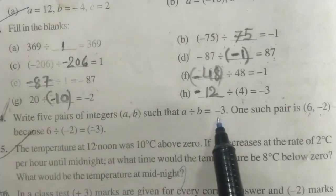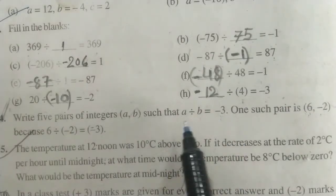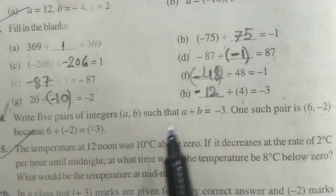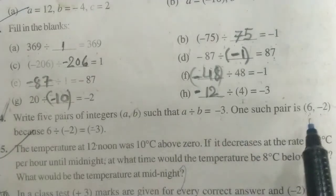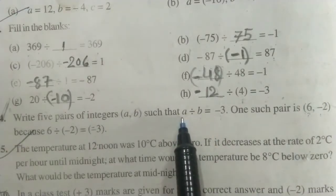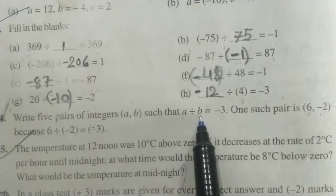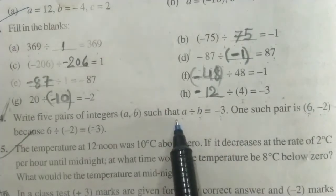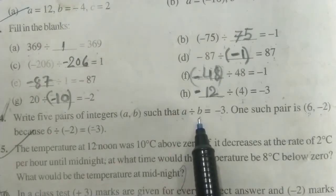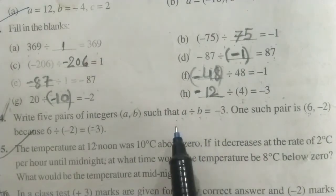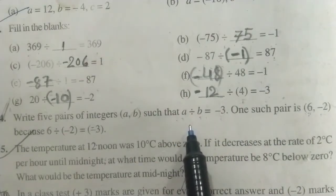इस प्रकार से हम और pairs ले लेंगे। Table ही ले लेते हैं। जैसे 6 लिया है, अब अगर 9 लेते हैं — 9 तो 3 तीन 9 — तो A की value 9 और B की value 3 होगी। 9 को 3 से divide करेंगे तो 3 आ जाएगा। Minus 3 के लिए sign बदल देते हैं। We will get many pairs. So I am explaining on a paper.